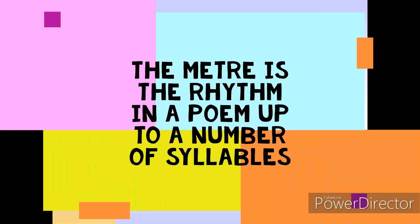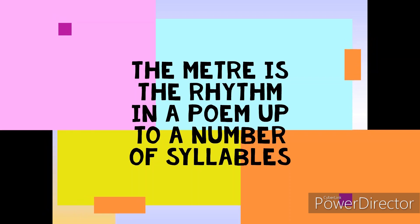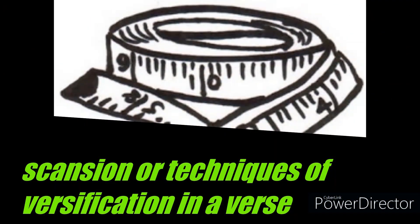Before we explore the eight meters in English poetry, we should better define the meter. A line or a verse in a poem is called a meter. This meter is studied through scansion — a technique of versification put in place by the author in order to attract the reader. When we analyze the poem, we scan it.